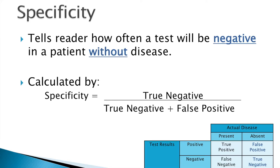Specificity, on the other hand, is calculated by taking all the true negatives and dividing them by the true negatives plus the false positives.